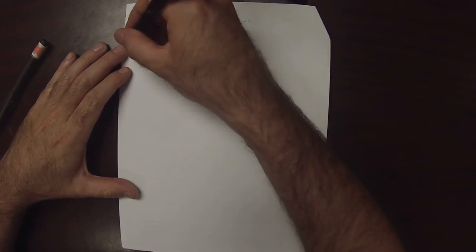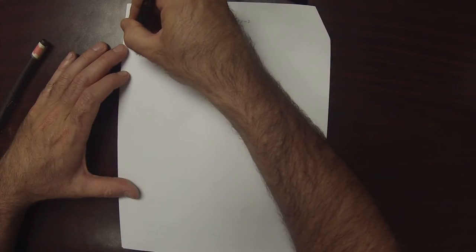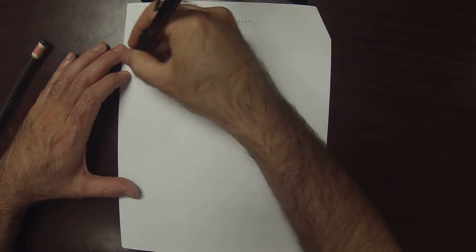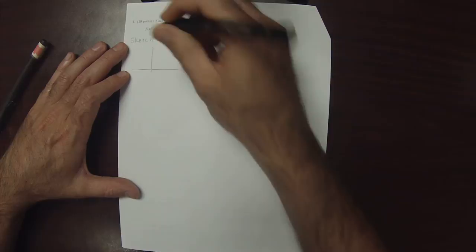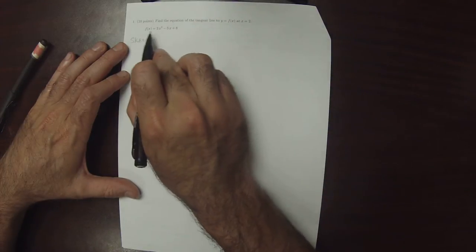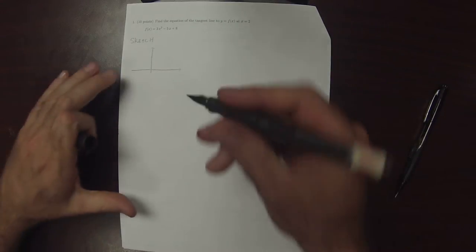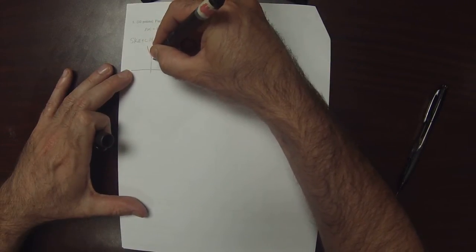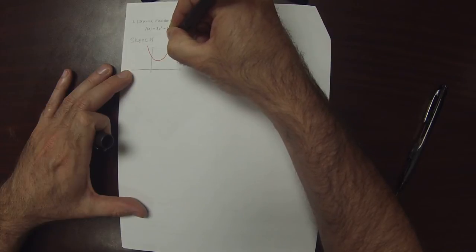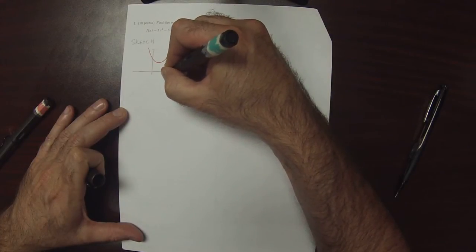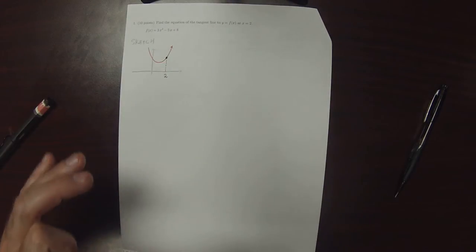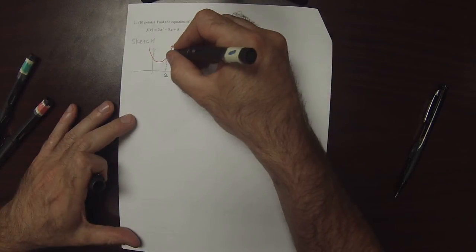The question is, find the equation of the tangent line. So, a sketch of this. So, f is a quadratic with a positive leading coefficient, so it's a quadratic that opens up.